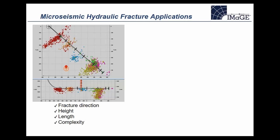To introduce microseismic: what you see on the slide is a map view where different colors represent different fracturing stages. Towards the toe of the well, three colors — three fracture stages — went into the same place along the wellbore. This was due to an issue with the mechanical completion: the sliding sleeves didn't work properly. Microseismic was used to diagnose and help correct the problem, and after correction the last three stages were placed in the proper place along the wellbore.